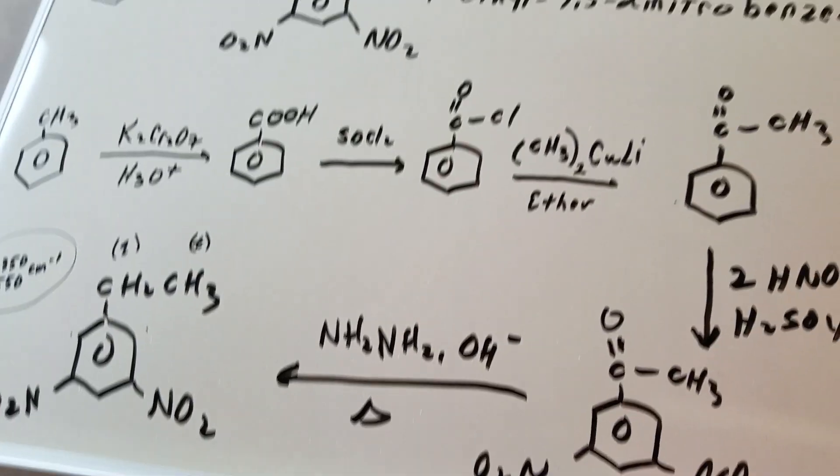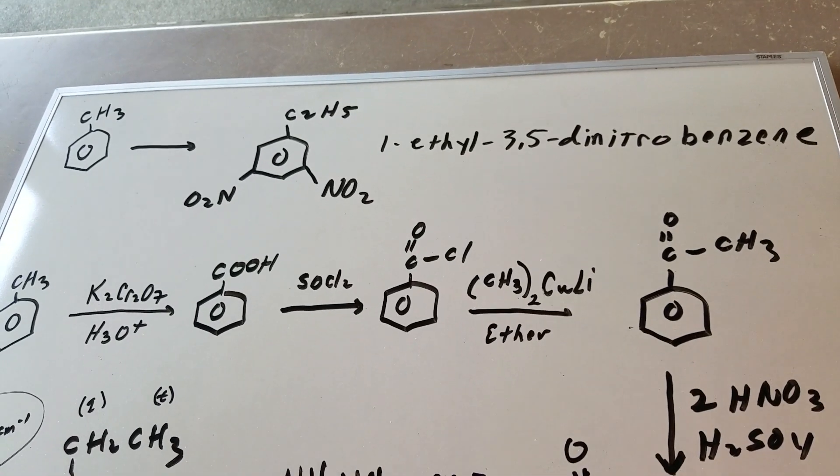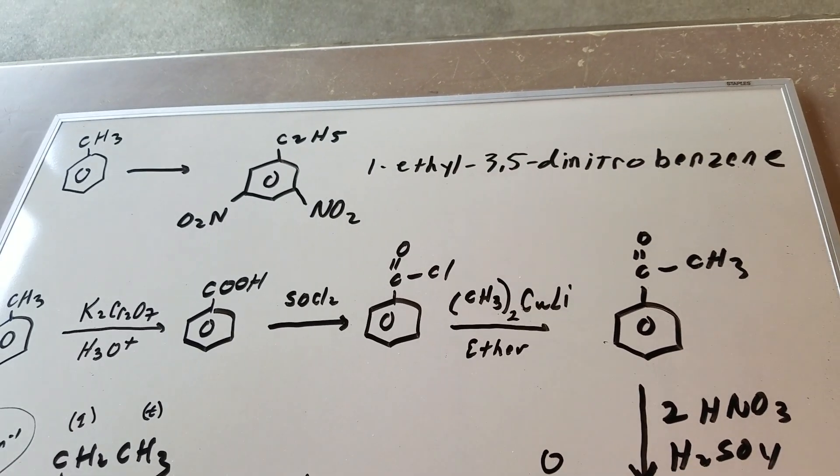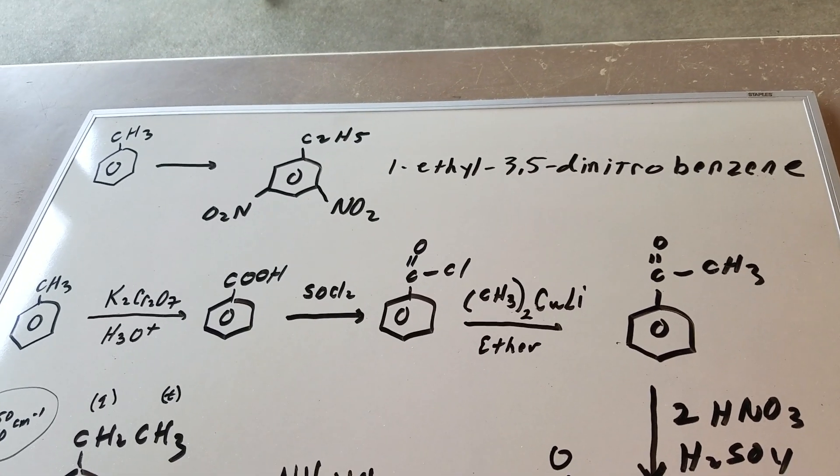All right. I hope this helps and gives you a good idea on the way I did this chemistry on going from toluene into 1-ethyl-3,5-dinitrobenzene.